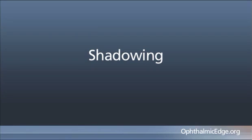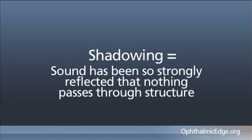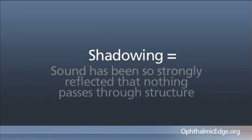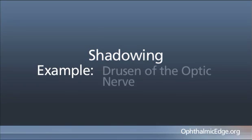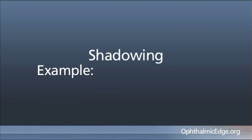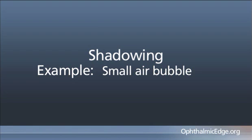Shadowing is a similar term — it means the sound has been so strongly reflected that nothing basically passes through it. A choroidal osseoma is a classic example. Drusen on the head of the optic nerve are another. A small air bubble inside the eye is another, such as might occur in a double-penetrating injury. The air bubble remains in the vitreous cavity — it's very different from water, and the strong reflection from the anterior portion of the bubble will obscure anything behind it. It will be shadowed.